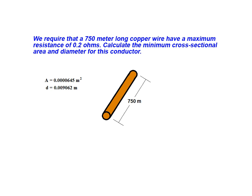Now that we have the solution values, we will convert them and express our final answer using standard units. Our value for cross-sectional area can be expressed as 64.5 millimeters squared, and our resulting diameter value can be expressed as 9.062 millimeters.